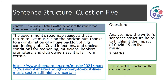Question five. Context: The Guardian's Katie Hawthorne looks at the impact that coronavirus is having on the live music industry. 'The government's roadmap suggests that a return to live music is on the horizon, but thanks to a combination of a huge backlog of gigs, continuing global COVID infections and unclear conditions for reopening, musicians, bookers, promoters and club owners say it's far from certain.' Analyse how the writer's sentence structure helps to highlight the impact of COVID-19 on live music. This is a two mark question. Highlight the punctuation that stands out to you, then pause the video for around three minutes.